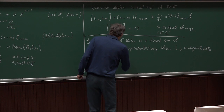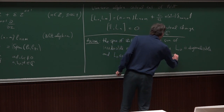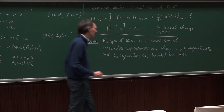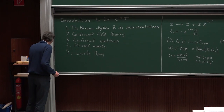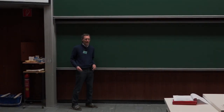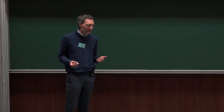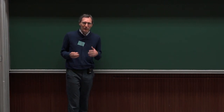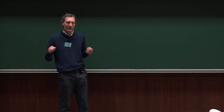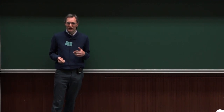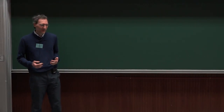Additionally, L_0 eigenvalues are bounded from below. The justification is that L_0 corresponds to the generator of dilations, and we want to interpret it as the Hamiltonian of our theory — if we interpret the radial coordinate as time, L_0 is the Hamiltonian. The eigenvalues of L_0 are energies, and energies must be bounded from below, otherwise the system is unstable.